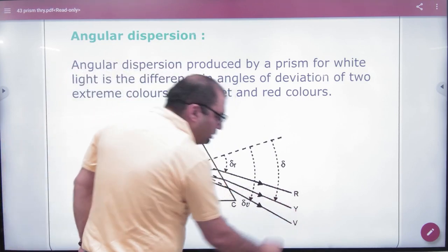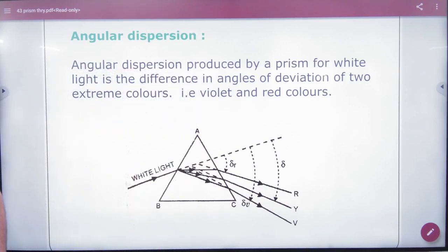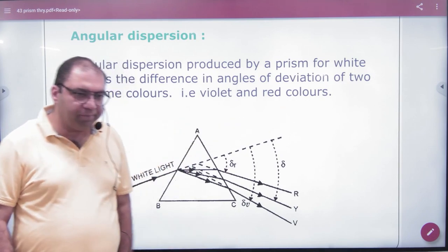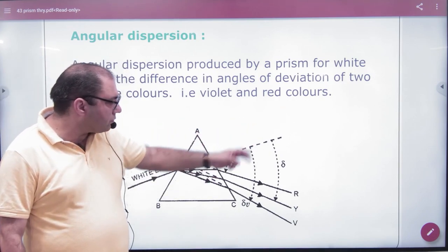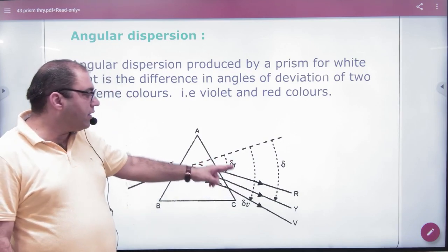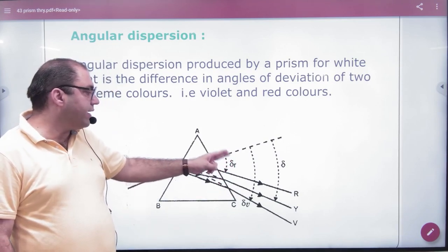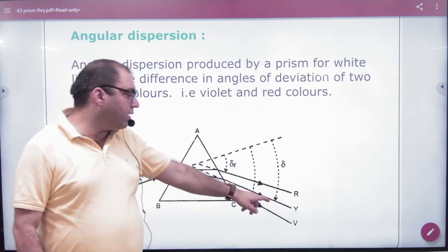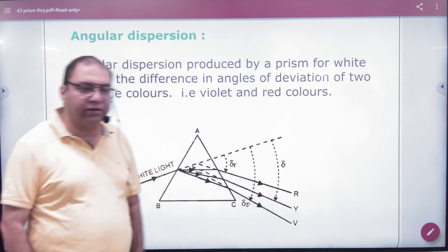Yellow is the mean color. So in actual light, violet deviation is delta V and red deviation is delta R, and the mean color angle is delta.